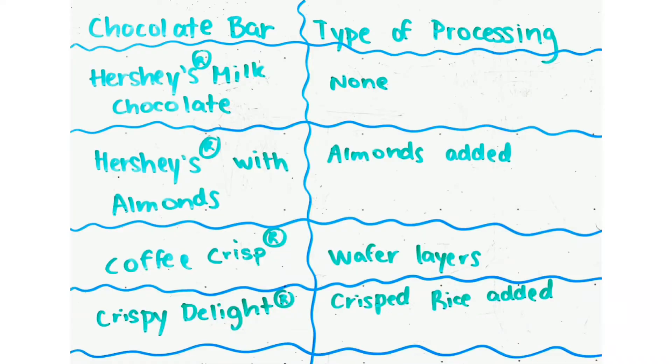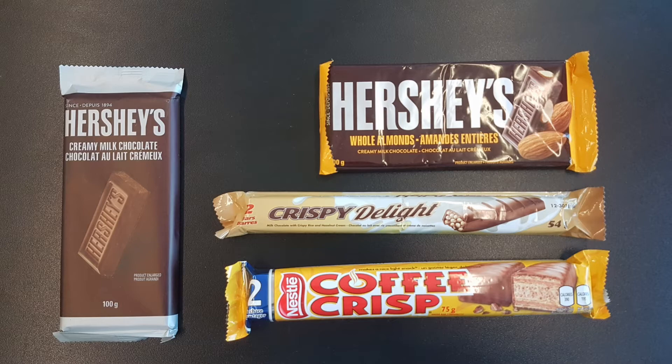Materials that share the same atomic traits have different strengths, depending on their microstructure. These chocolate bars have the same atomic traits — milk chocolate — however, their microstructures are different. For example, we have almonds in a bar, crispy rice, and wafers.